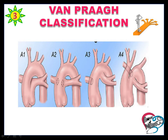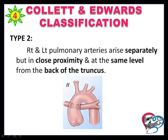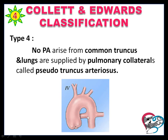Now the Collett and Edwards classification. Type 1: the aorta and main pulmonary artery share a common arterial trunk. Type 2: the right and left pulmonary arteries arise from the posterior aspect of the common trunk. Type 3: the pulmonary arteries arise independently from the lateral aspect of the trunk.